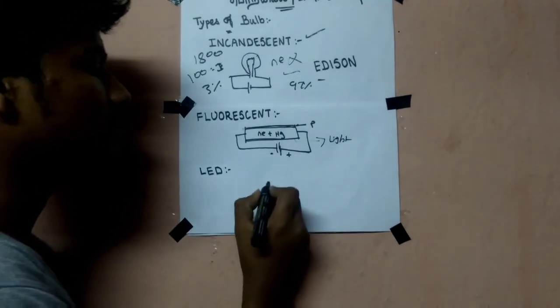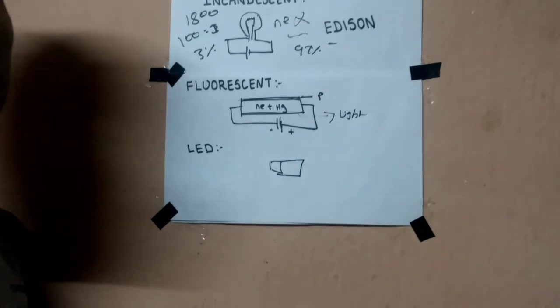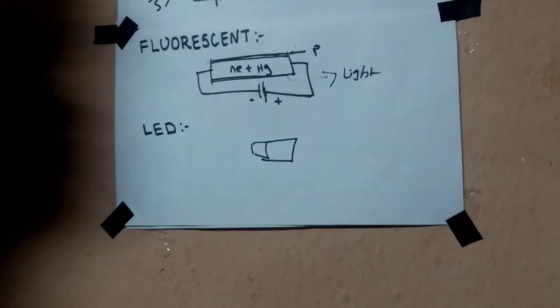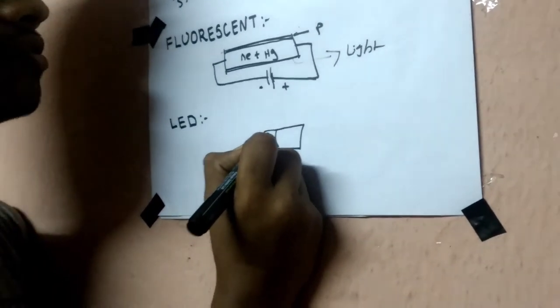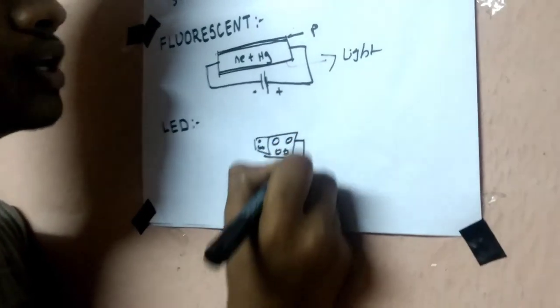The next is LED, the basic concept. We use semiconductors. There are conductors, semiconductors, and insulators. In conductors there are free electrons. In insulators there are no free electrons.